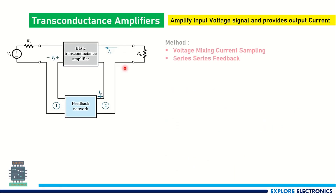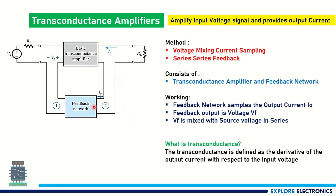Coming to the transconductance amplifier, it is achieved by series-series feedback. Here we sample the output current serially, and the feedback network output is a voltage — so the feedback network behaves as a current-to-voltage converter. At the mixer side, connecting in series means it is a voltage quantity, and taking the output-side signal serially means it is a current. Transconductance is the ratio of variation in output current with respect to input voltage, and this series-series feedback configuration achieves that.